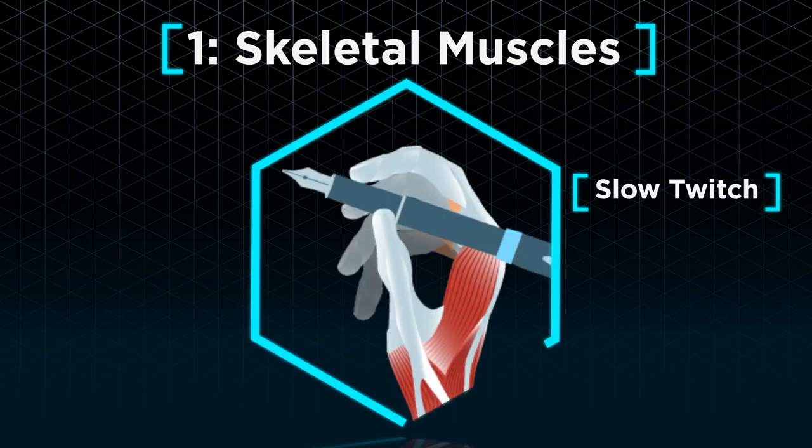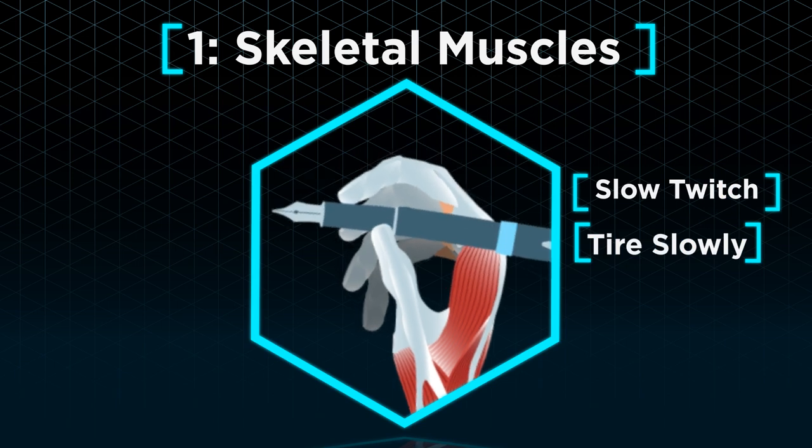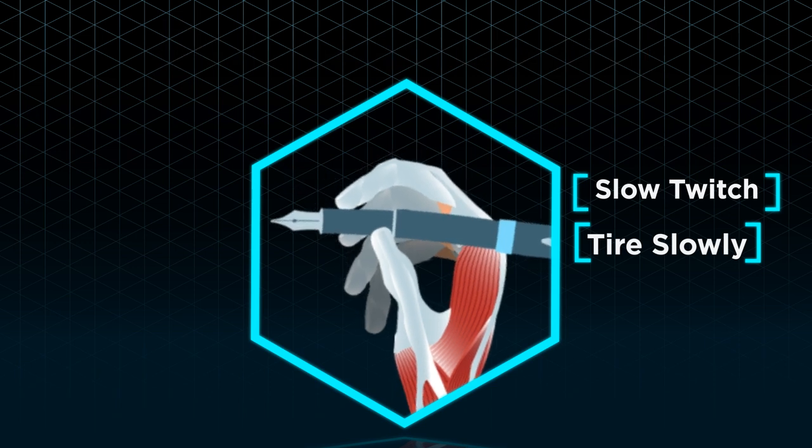On the other hand, slow twitch muscles move much slower but tire a lot less easily. For instance, you can write with a pen for quite some time in your hand before it actually gets really tired.